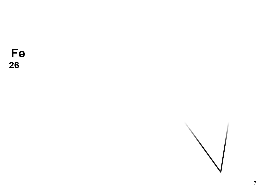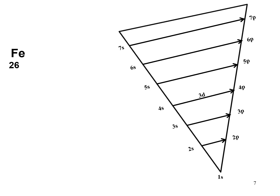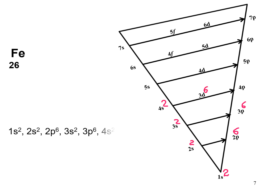Let's take another example: iron. The atomic number of iron is 26. Drawing the energy level diagram and filling 26 electrons from lower to higher energy: 1s² 2s² 2p⁶ 3s² 3p⁶ 4s² 3d⁶. This is the electronic configuration for iron.